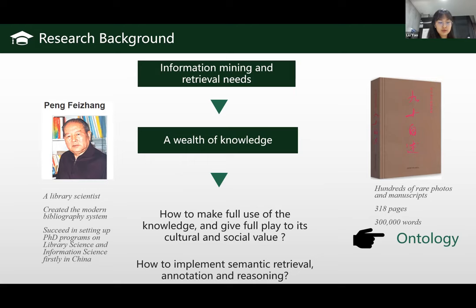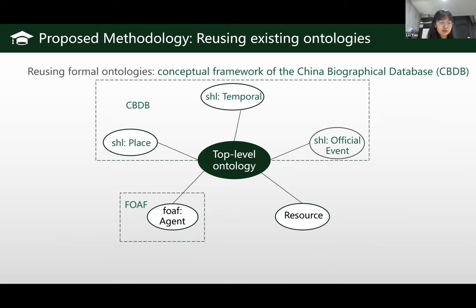With the rise of digital humanities research, the content of biographies has become richer and more diverse. For example, Mr. Peng Feiqiang, a very famous library scientist in China, established his autobiography in 2020. This autobiography has hundreds of rare photos and manuscripts, totaling three million words, with rich characters and complex relations and interrelations. On this basis, we constructed a biographical ontology based on existing ontologies and terms extracted from the autobiography.